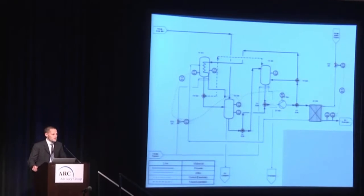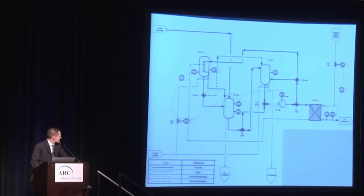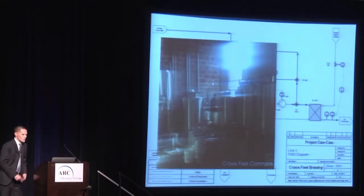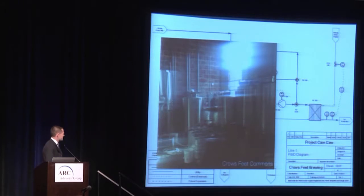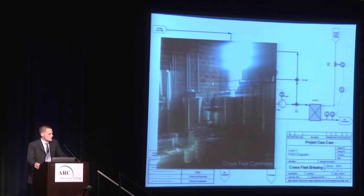So what do you think this is a system of? What does the diagram represent? This is a brewery in Bend, Oregon — the Crows Feed Brewing Company. That diagram shows the way that the different components of that system, the beer system, flow from one tank to another, one category to another.